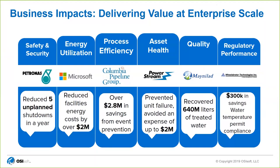Some use cases have led companies to save money and get a nice return on their investments. For example, Microsoft reduced their data center facilities usage and saved over $2 million. Columbia Pipeline Group, now TransCanada, saved over $2.8 million from event prevention through condition-based maintenance — maintenance that happens before an asset goes down.